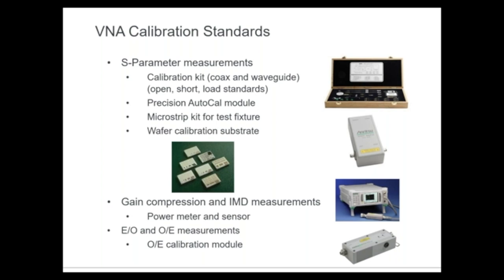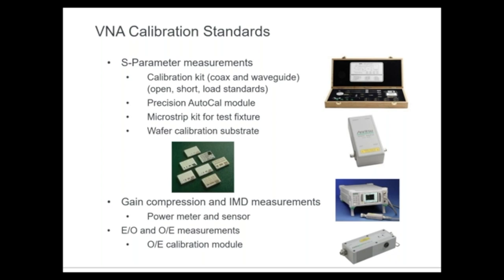There's a lot more that today's modern VNAs can do beyond standard S-parameter transmission and reflection measurements. We can sweep not only frequency but also power. For power-type measurements — gain compression, intermodulation distortion, or IMD — we need a power meter to calibrate the system, because instead of ratioed measurements we're strictly measuring absolute power. The power meter provides the power reference. Additionally, we can perform optoelectronic measurements using a reference optical-to-electrical module as a front end for the microwave VNA; that module is fully characterized in magnitude and phase and serves as a calibration tool for cross-domain optical-to-electrical measurements.